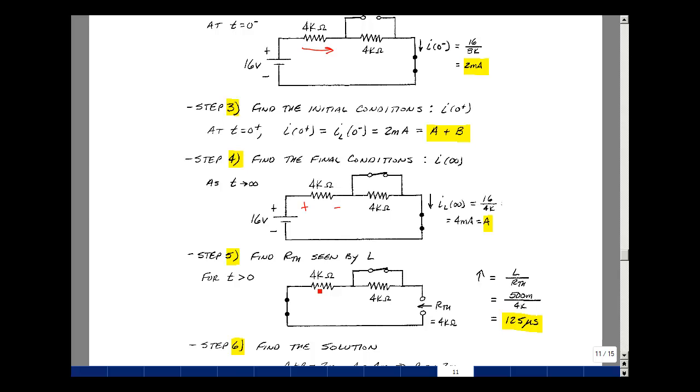Step 5 is to find the Thevenin resistance seen by the inductance. Do that with all the independent sources set equal to zero. That's a short for a battery. But our switch is closed. So again, this looks like zero ohms. So all you see looking back is the 4k resistor.